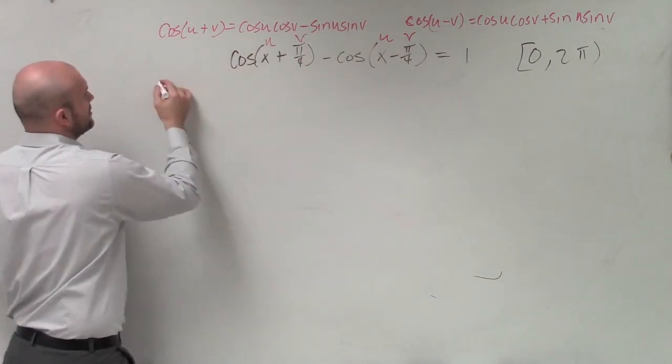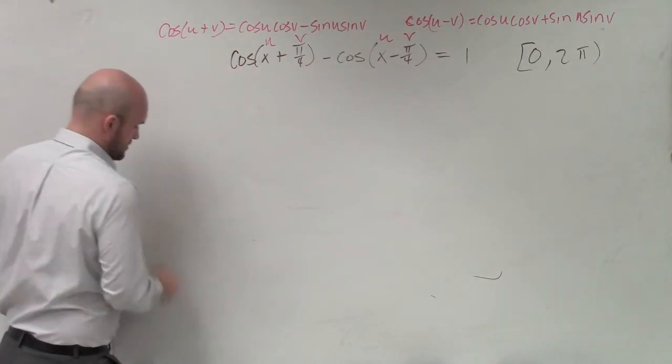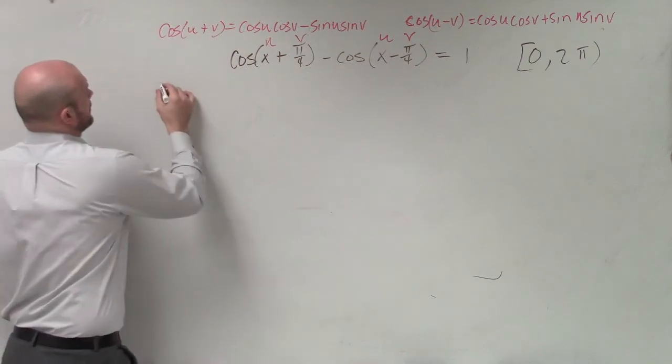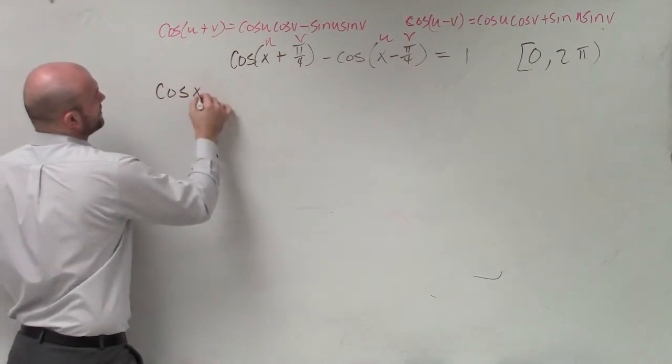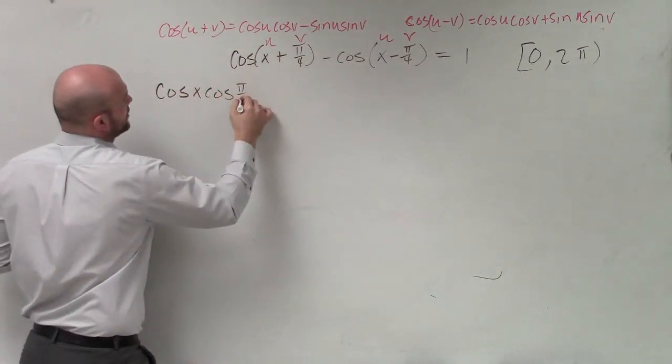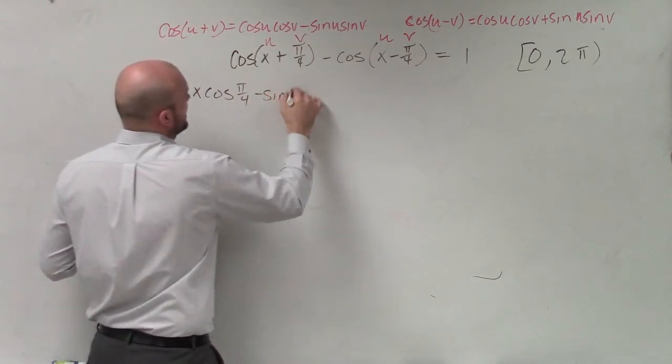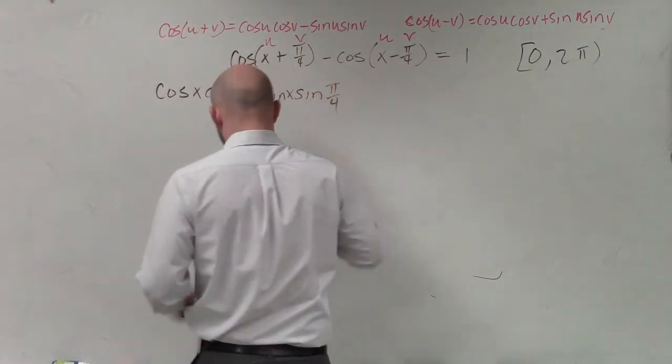So I'll do the sum first, which will be, actually let me do it back. So I have cosine of x times the cosine of pi over 4 minus the sine of x times the sine of pi over 4.